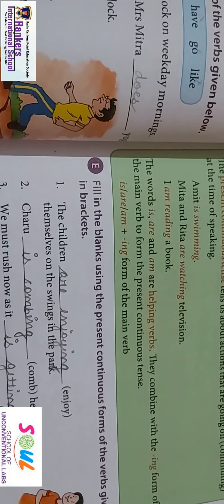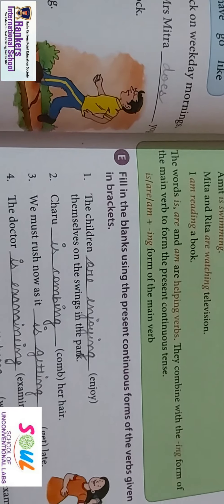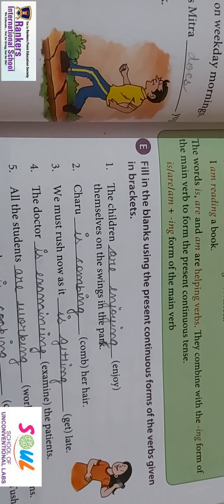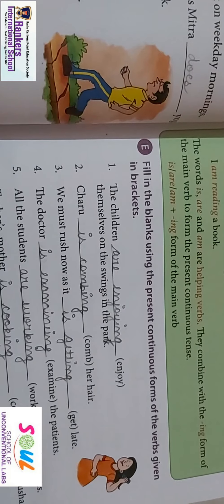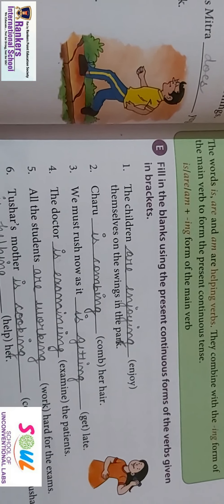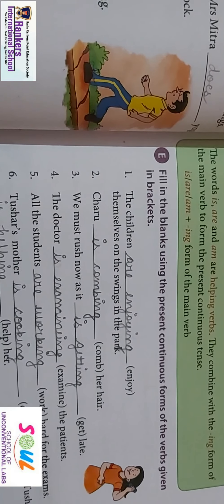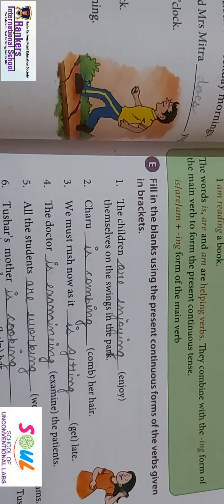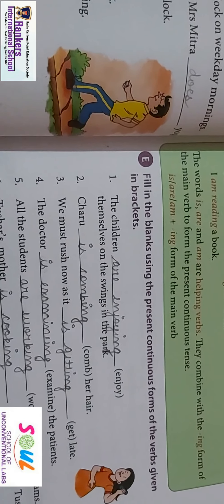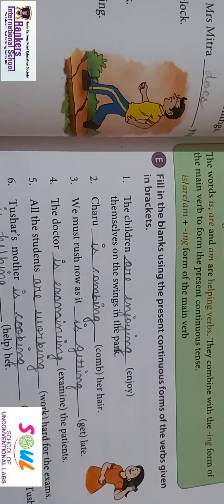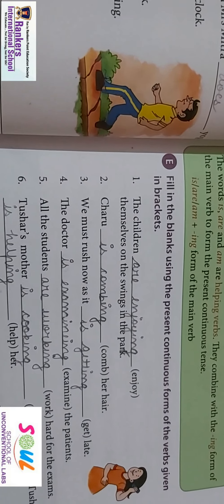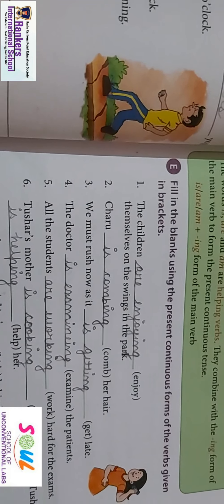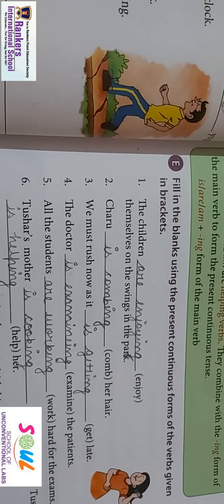An exercise is given for you all and we will understand with that. Fill in the blanks using the present continuous form of the verbs given in brackets. Number one: the children dash enjoy themselves on the swings in the park. So how are we going to convert them into the present continuous form? We have to take the help of the helping verbs according to the subject. 'Children' is a plural subject, so you will use 'are'. You are not going to use 'is' or 'am'. You have to use 'are enjoying' — enjoy is the main verb, and you add ing to it to make 'enjoying'.